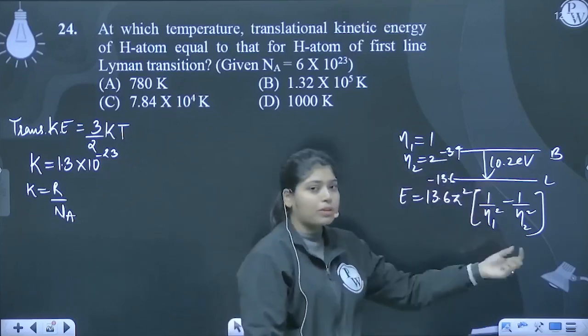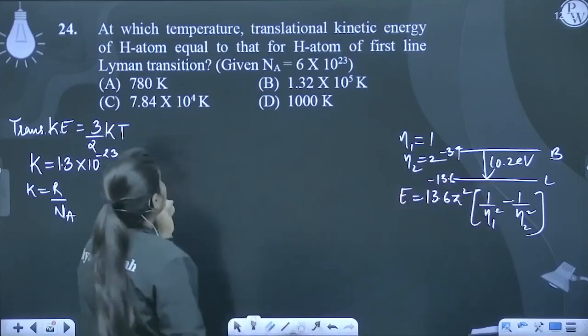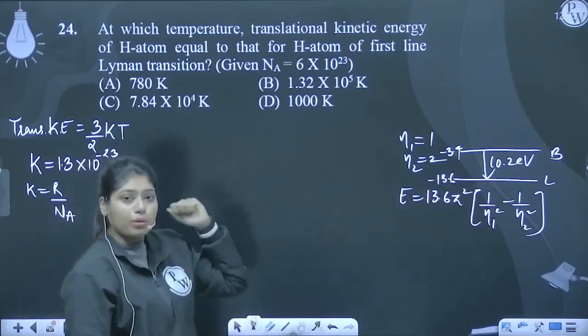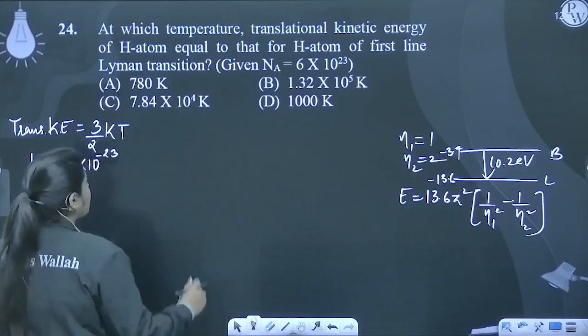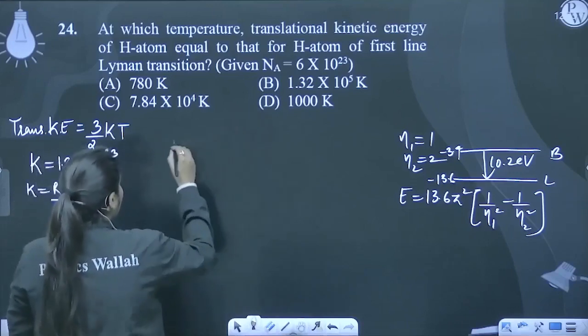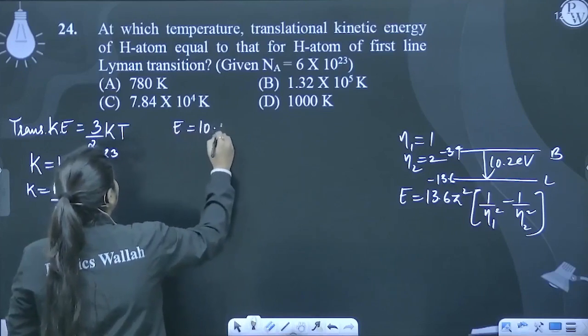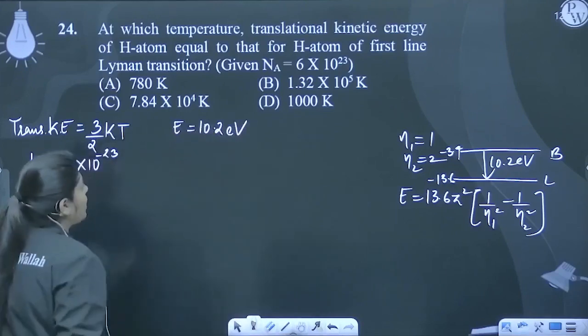So the difference is 10.2. The first line, which will be Lyman transition, which will be what energy difference will be? 10.2 eV. So we will know directly how much energy is. The first line in Lyman transition.